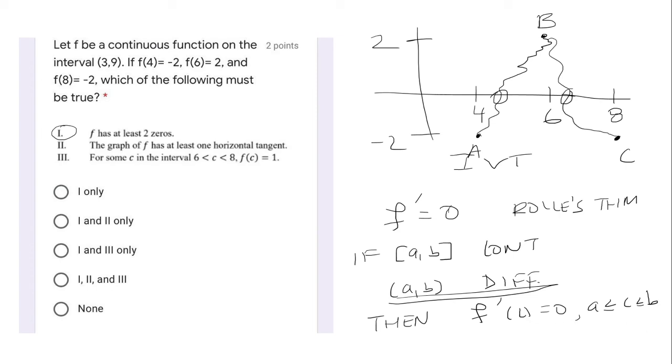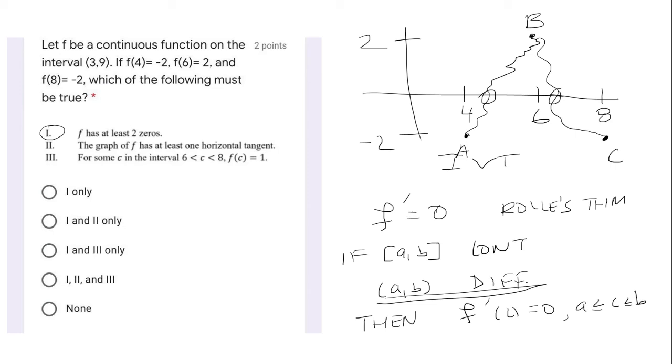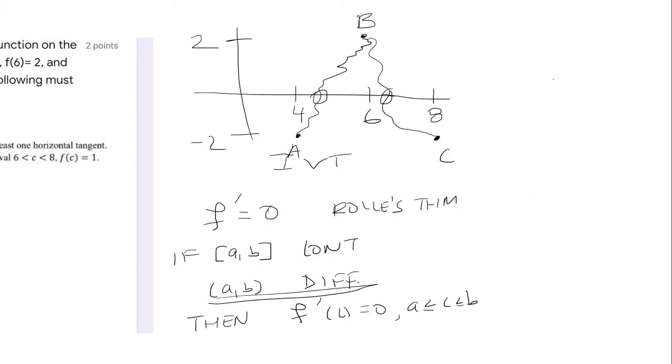So to convince you even more, what if it was something like this, where there was a sharp corner, let's say, point B. This is not a horizontal tangent. The derivative at this point does not exist.